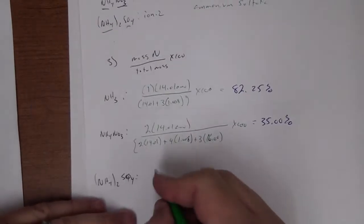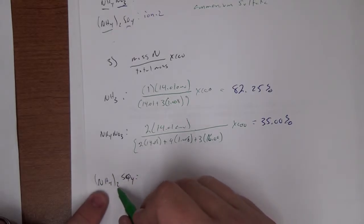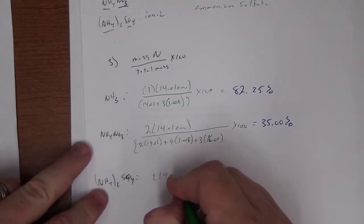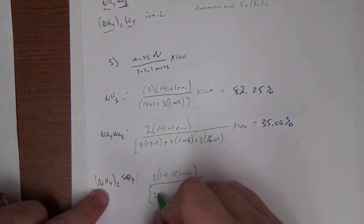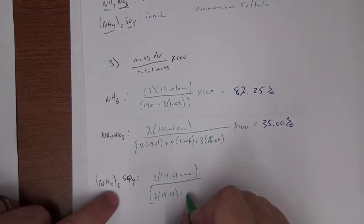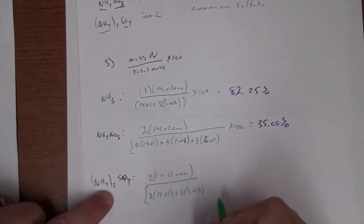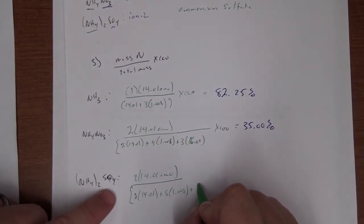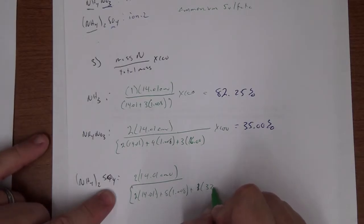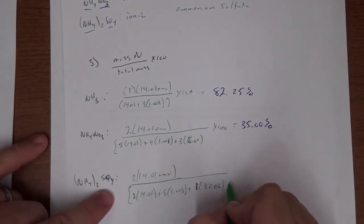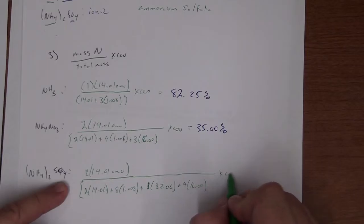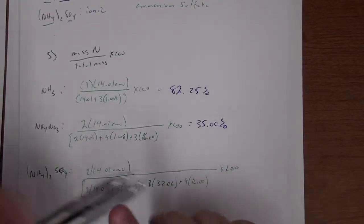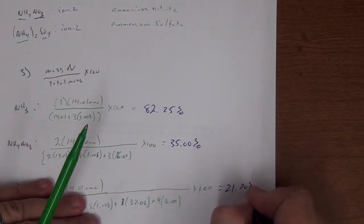For (NH₄)₂SO₄: we still have two nitrogens. Mass percent = [2(14.01)] / [2(14.01) + 8(1.008) + 1(32.06) + 4(16)] × 100 = 21.20%.